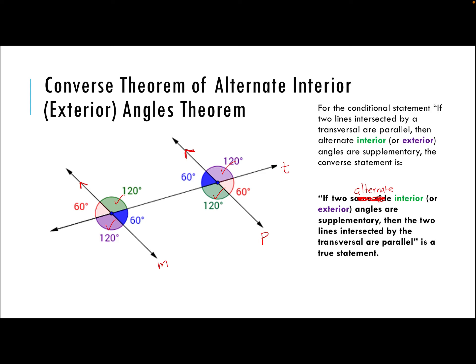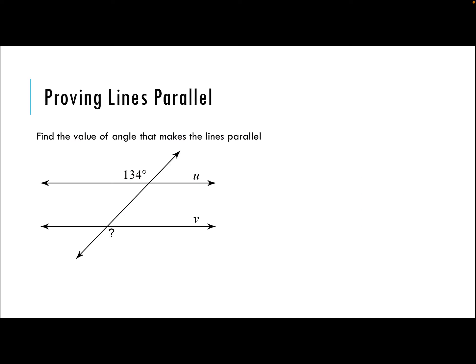Now we're going to do practice problems you can expect to see on a test or standardized state test. First, we have to find the value of the angle that makes line U parallel to line V. We see alternate exterior angles — on different sides of the transversal and outside of lines U and V. Our converse theorem says that if alternate exterior angles are congruent, then lines U and V are parallel. So the missing angle needs to be 134 degrees, and that's how we know U is parallel to V.